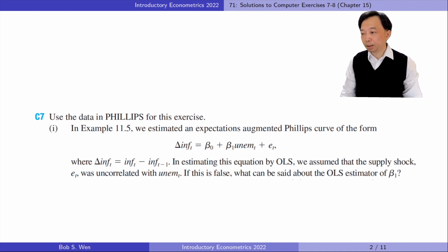If the error term ET is correlated with the explanatory variable unemployment, the OLS estimator of beta 1 suffers from omitted variable bias.